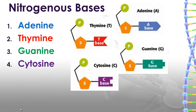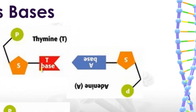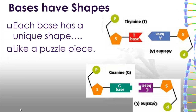Let's talk about nitrogenous bases. These are the genetic code. The sequence of adenine, thymine, guanine, and cytosine make up your genetic code. Each nitrogenous base has a specific shape, and that's on purpose, because in real life the molecules that are the nitrogenous bases have a unique shape and they fit together like puzzle pieces.